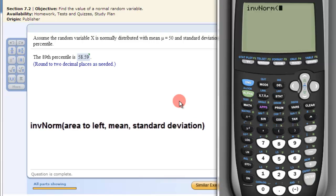The inverse or INV norm function takes in the input of the percent that's to the left. So the 89th percentile means 0.89 of the area is to the left.